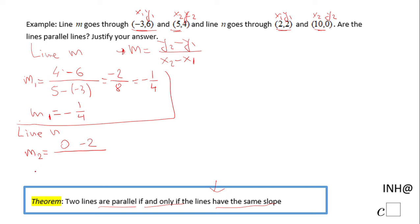0 minus 2 is -2, and 10 minus 2 is 8. We notice the same quotient as in the previous one. We can also simplify and notice m₂ is -1/4.